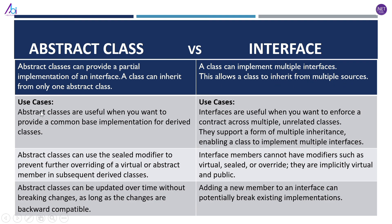When we talk about use cases: abstract classes are useful when you want to provide a common base implementation for derived classes. Interfaces are useful when you want to enforce a contract across multiple unrelated classes, and they support a form of multiple inheritance, enabling a class to implement multiple interfaces.